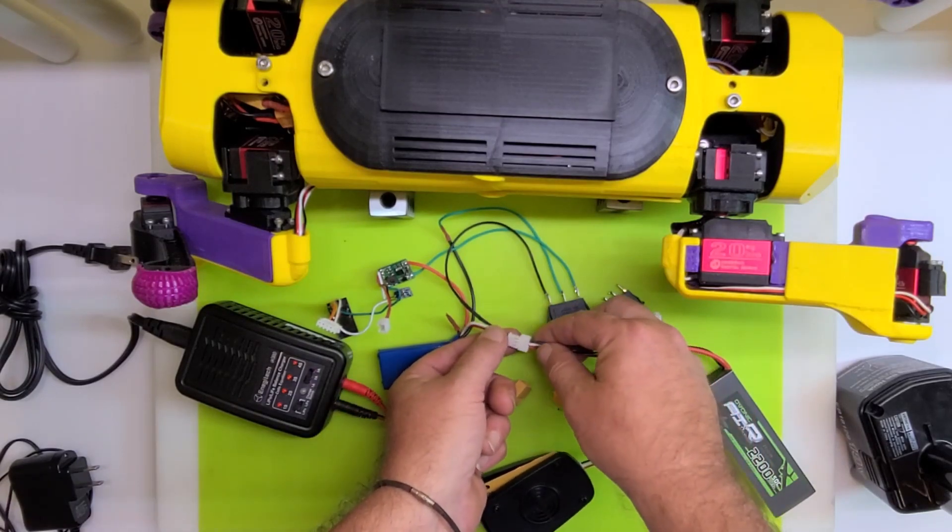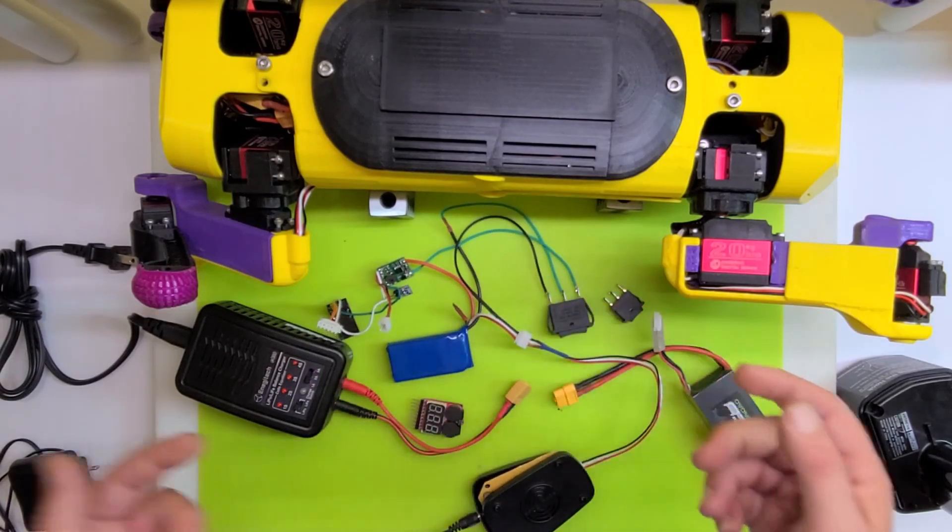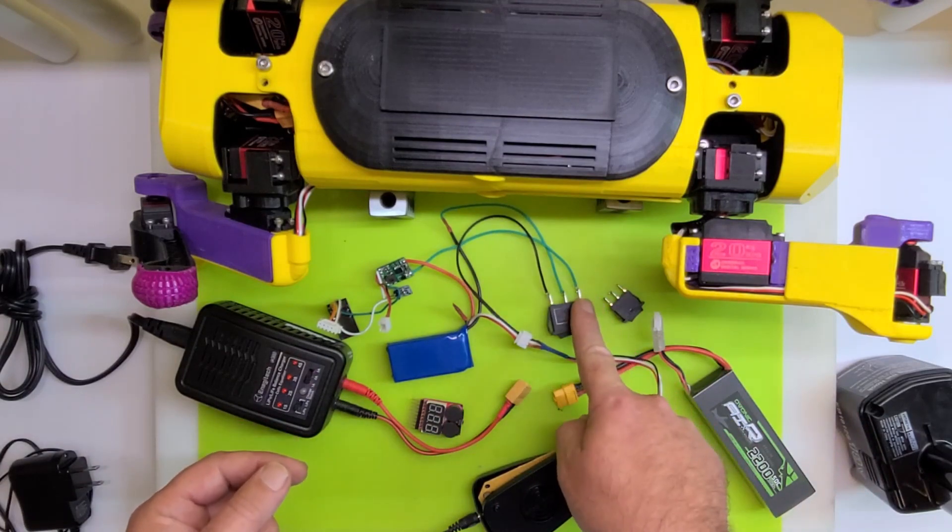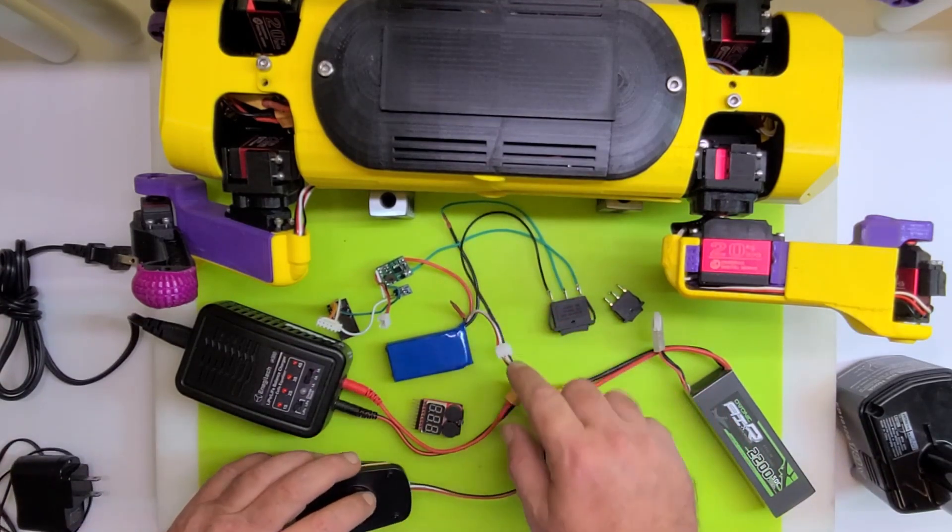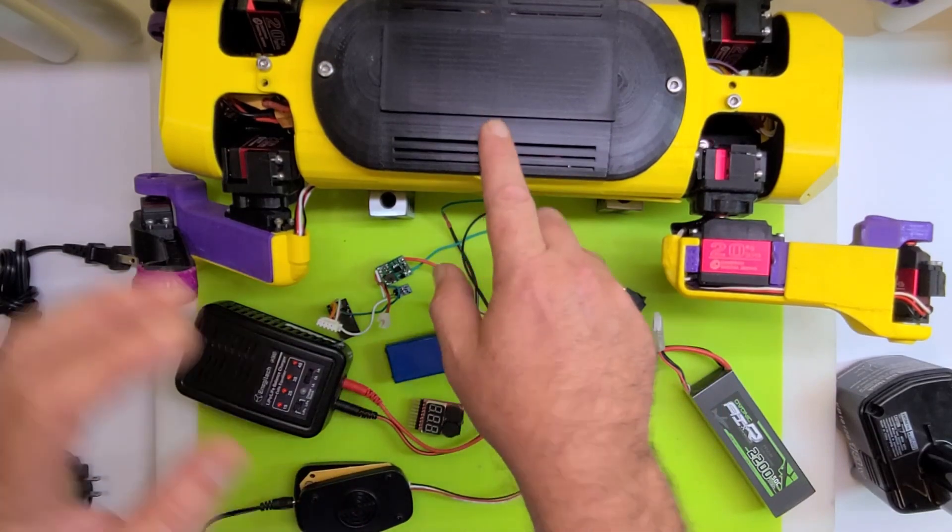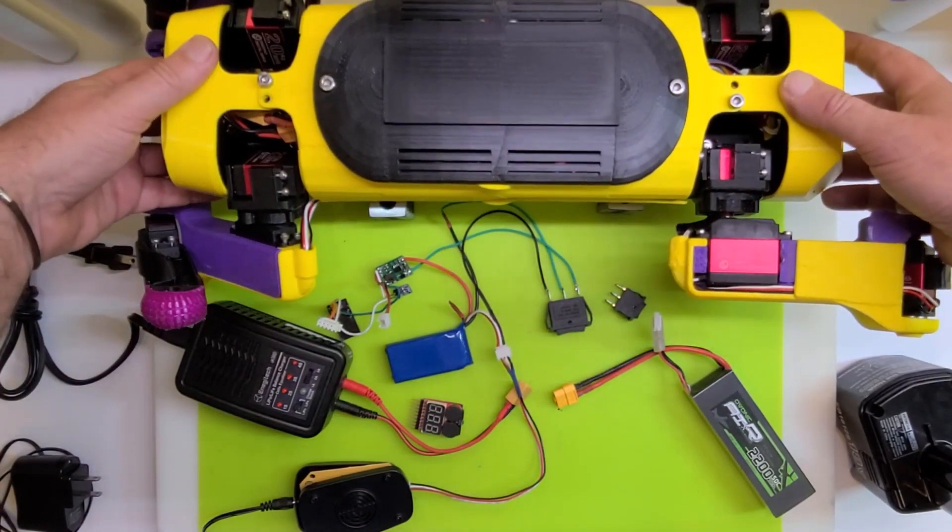What I've done with this cheap little charger that comes with these batteries, I just created my own JST cable with a male JST on the end here. So then this just plugs in to there and away I go, I'm charging once I throw that switch.